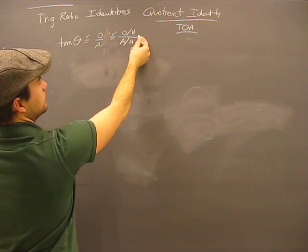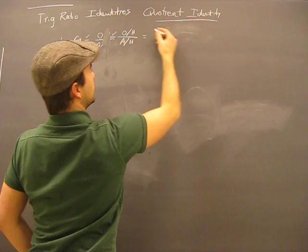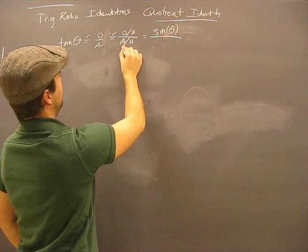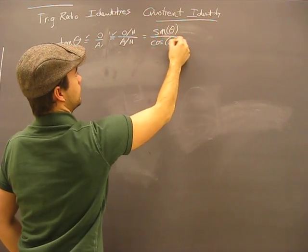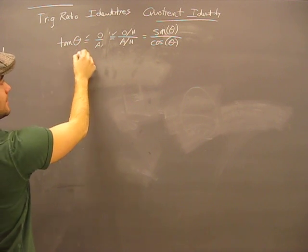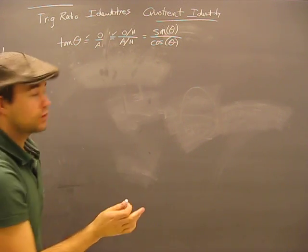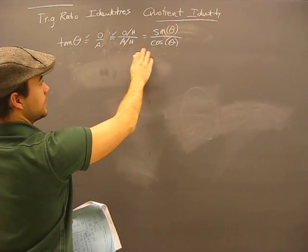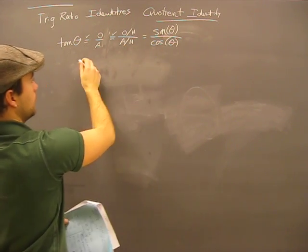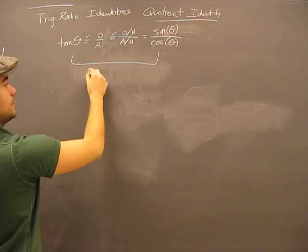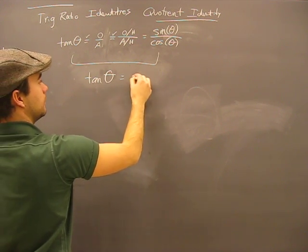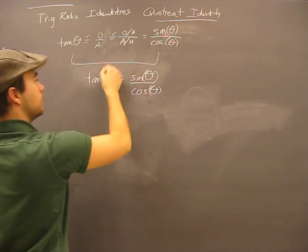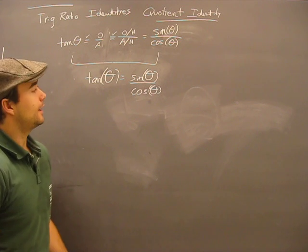Now we know that this is really sine over cosine. We've taken tangent with the basic sides of the triangle and said well let's make it look different but keep the same value. And we know that what we really have is sine over cosine, thus proving our quotient identity.